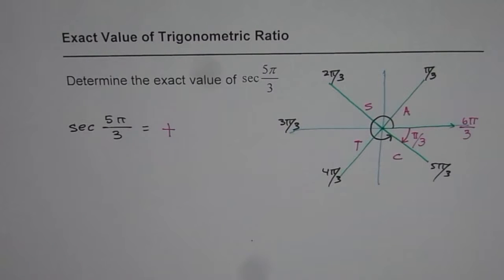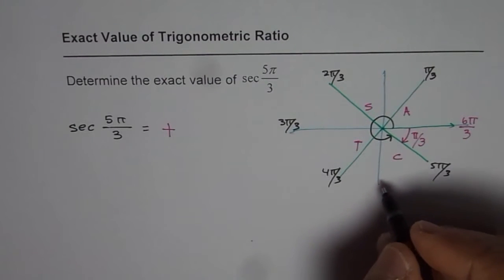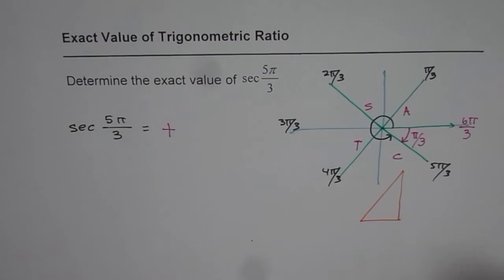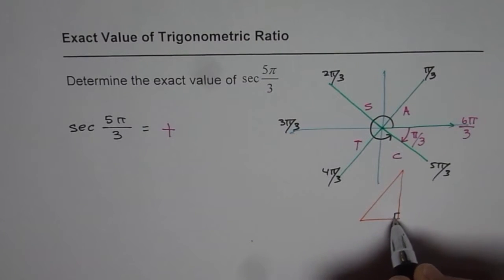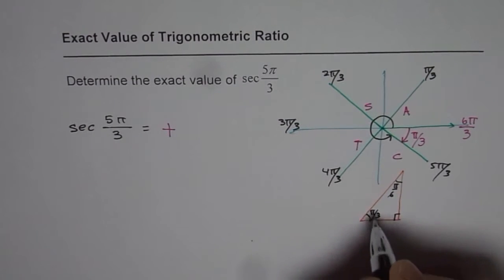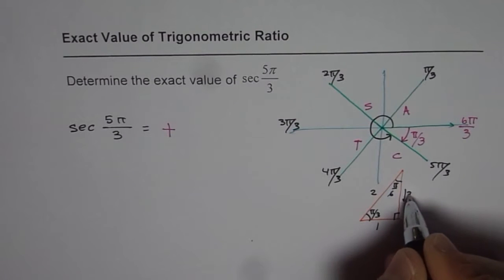To get the exact value we can sketch the special triangle: 30, 60, 90 or pi by 3, pi by 6 and 90. So that should give us the value. So here we are. We have pi by 3, pi by 6, and the sides are 1, 2, square root of 3.